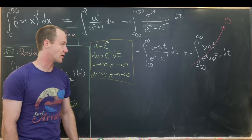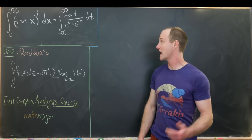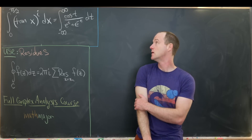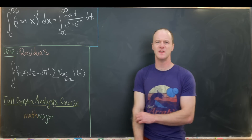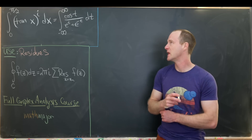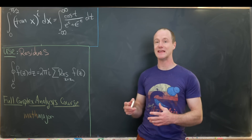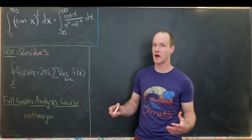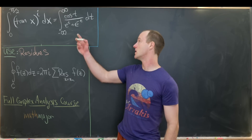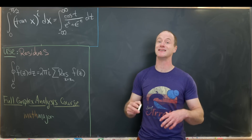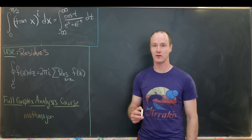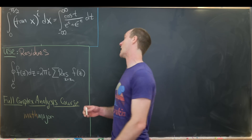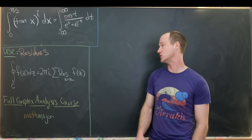We've determined that our goal integral equals the integral from −∞ to ∞ of cos(t)/(e^t + e^(−t)) dt. Now we transform this into a complex plane integral. The idea is to calculate a closed contour integral easily using the residue theorem, where portions of the contour are easy to evaluate, and the difficult portion corresponds to our goal integral — putting it all together yields an equation we can solve.